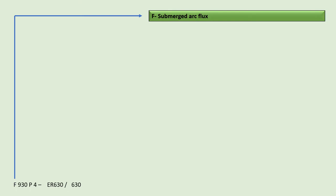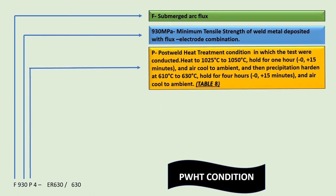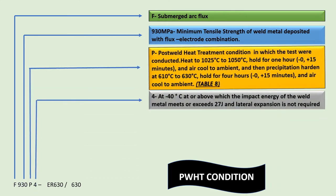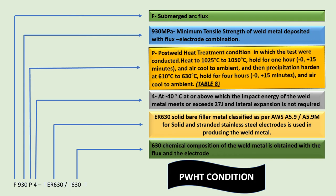Let us see what changes there are when we have a requirement for post-weld heat treatment condition. F shows submerged arc flux; 930 indicates tensile strength; P indicates the post-weld heat treatment condition. In this case, heat treatment has been carried out at 1025 to 1050 degrees Celsius, held for one hour and air cooled to ambient, then precipitation hardening takes place at 610 to 630 degrees Celsius for 4 hours and then cooled in ambient air. Minus 40 indicates the temperature at which the impact test of the weld meets the requirement of 27 joules. ER630 shows the solid bare filler metal classification as per SFA 5.9, and 630 indicates the chemical composition of the weld metal obtained with the combination of flux and electrode.